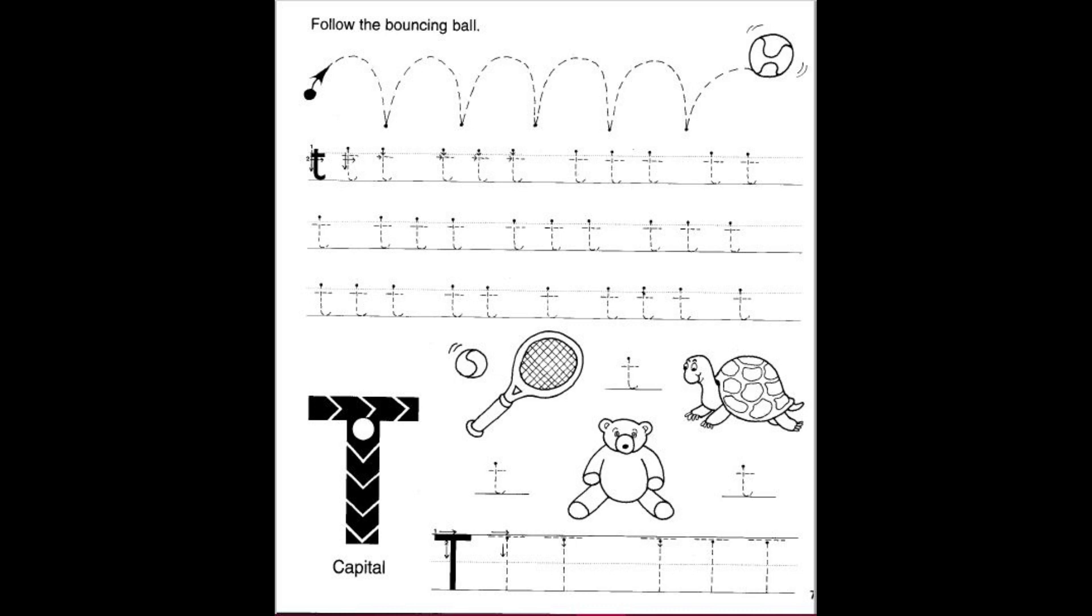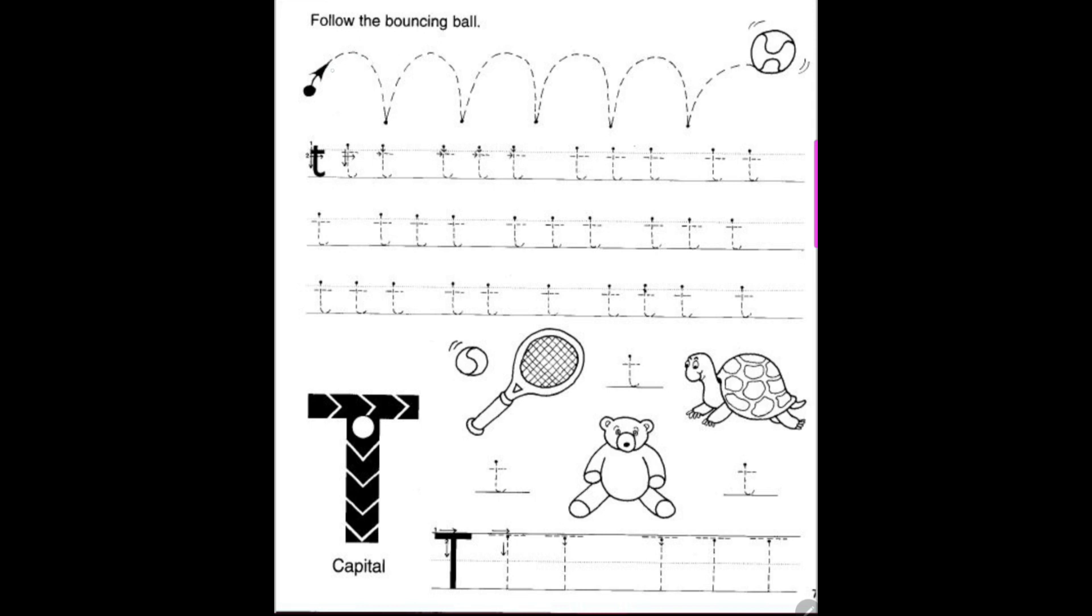Okay, let's open up our book to pages six and seven and get ready to write. Alright, got your pencil? Let's go ahead and start up on the top with the bouncy ball. So we're going to go down, up, over, down. It's okay if you have to pick up your pencil and readjust your hand because I have to.